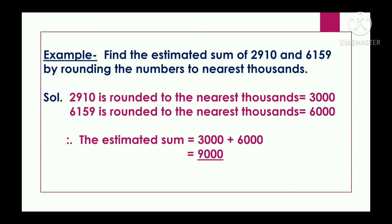Now let us see another example: find the estimated sum of 2910 and 6159 by rounding to the nearest thousand. 2910 rounded to the nearest thousand is 3000. 6159 rounded to the nearest thousand is 6000. Therefore the estimated sum is 3000 plus 6000, which equals 9000. I hope you have understood how to find the estimated sum by rounding to the nearest thousand.